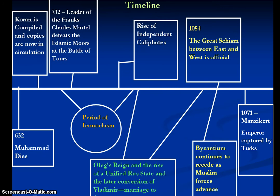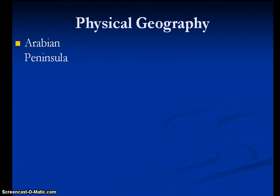That is one of the keys to understanding Islam and its expansion. It was, in many respects, a very rapid — almost like an overnight sensation. It took a little longer than that, obviously, but still there was a rapid expansion of Islam. So let's take a look at where it started: the physical geography of the Arabian Peninsula, the birthplace of Islam.